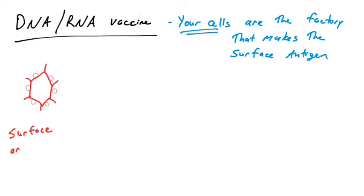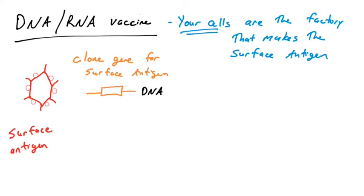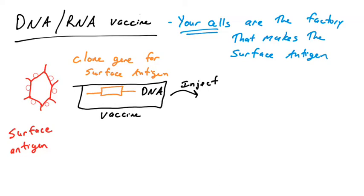If you have a pathogen you'd like to make a vaccine against, you identify some molecule you want an immune response to — for example, a surface antigen. You clone the gene for that surface antigen. In a DNA vaccine, the DNA itself is the vaccine. This gene is inserted into a piece of DNA such as a plasmid or some artificial chromosome.